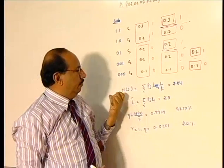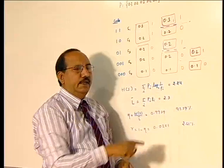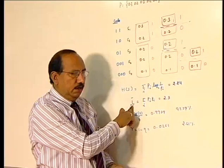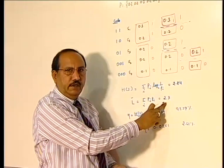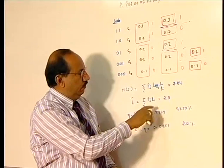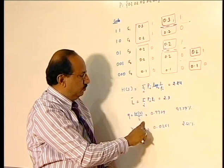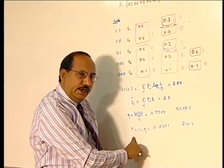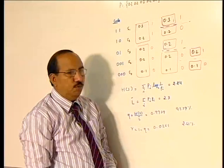I know the probability of the symbol. I am going to calculate the entropy of the system using this formula, that comes to be 2.24, and average codeword length I am going to calculate L bar. This is bits per symbol. L bar is 2.3. How much efficiency am I going to get? H(S) by L bar. If I calculate it comes to be 97 percent. How much redundancy still it has? 1 minus efficiency, that comes to be 2.61 percent.